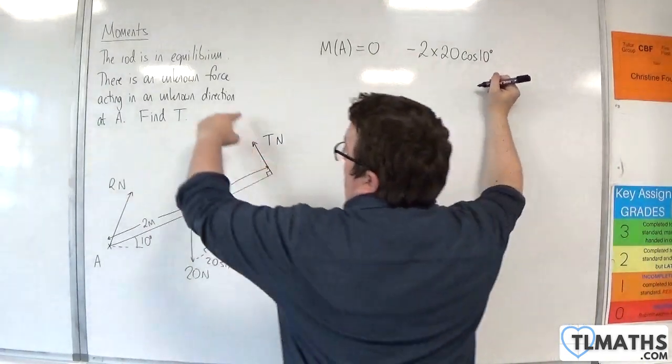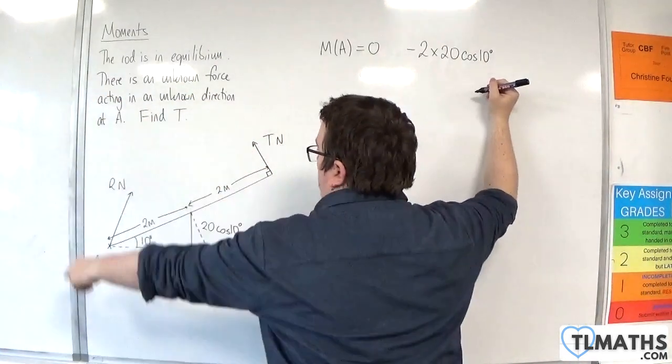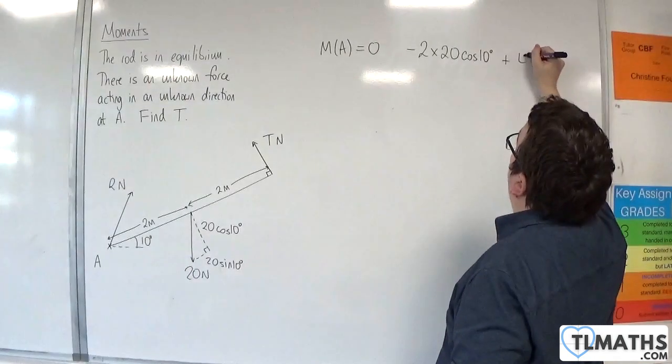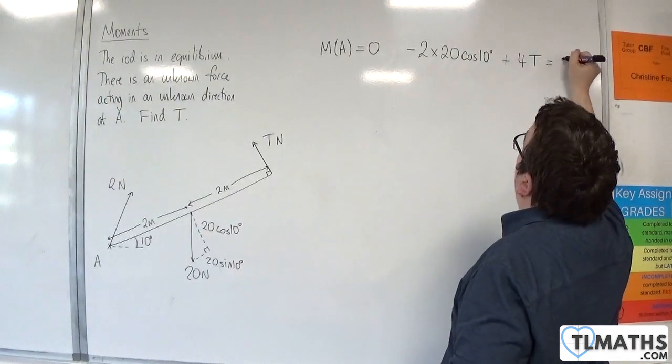And that's going around in an anti-clockwise motion. So plus 4 times T, and that's got to be equal to 0.